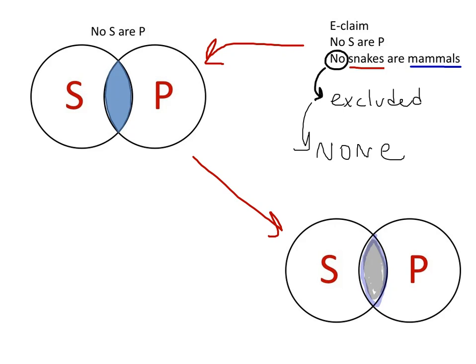Again, if we had a jigsaw, we could simply take this piece and cut it out of the puzzle. And that would accurately represent that categorical claim of the form No S are P.